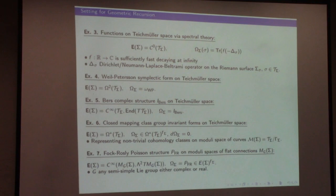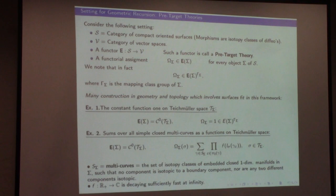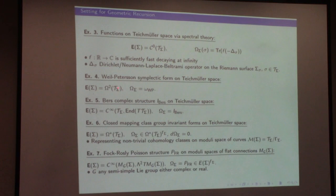Those are three examples that involve one target theory, namely continuous functions on Teichmüller space. Now I want to look at another pre-target theory: two-forms on Teichmüller space. The particular form I'm interested in is the Weil-Petersson symplectic form on Teichmüller space.